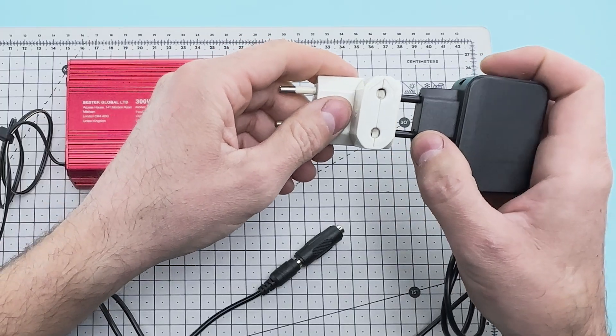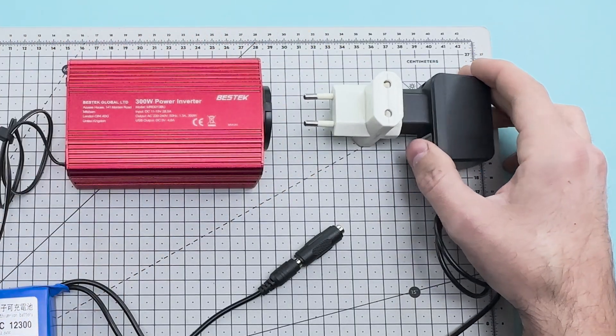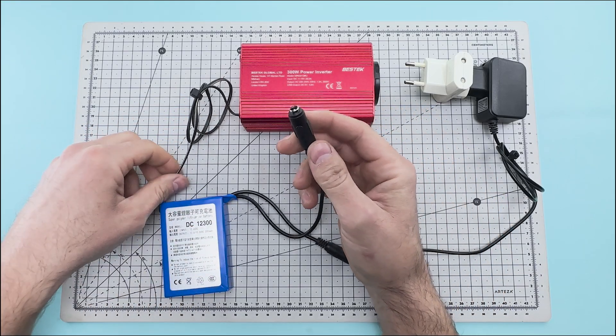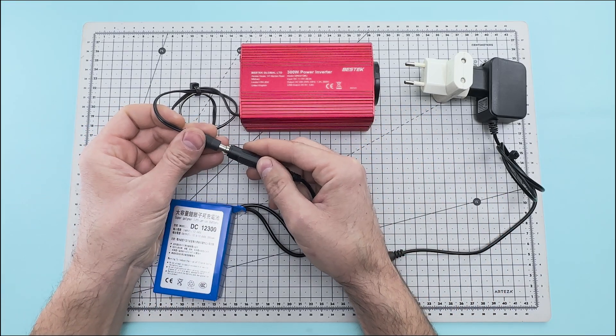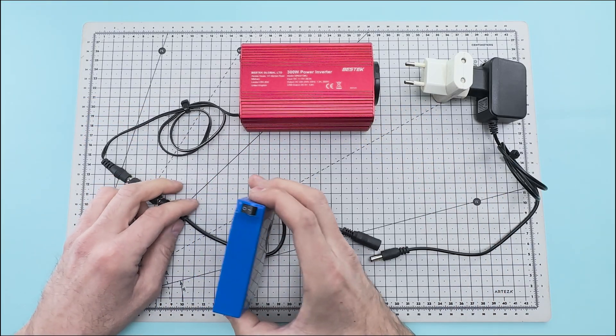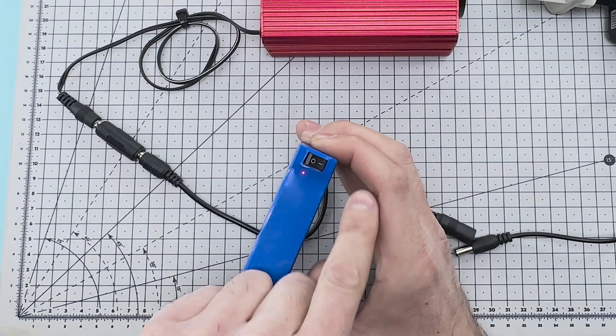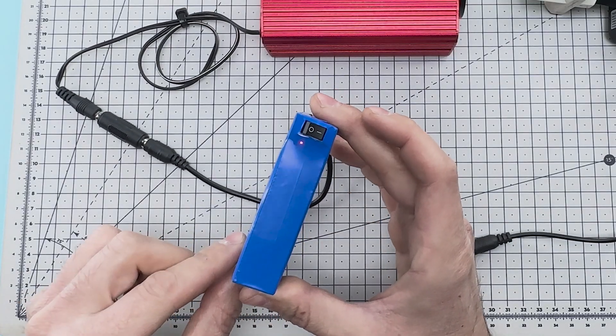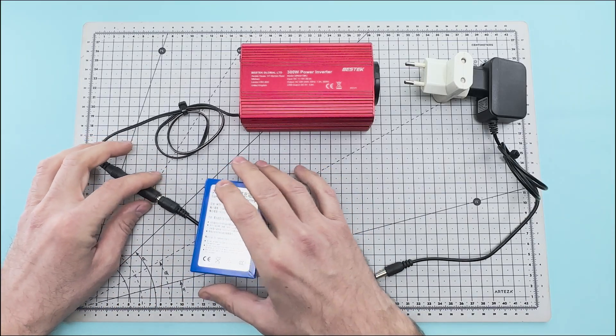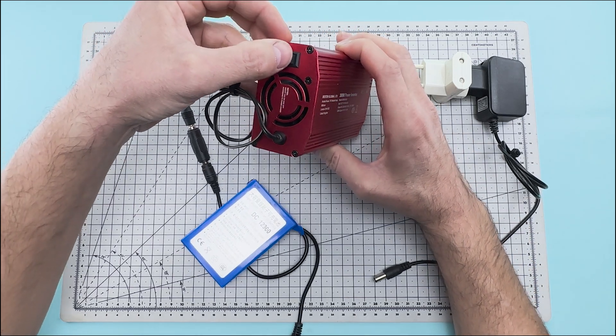We connect it to a multi-plug power strip. We connect the power inverter to the lithium battery. Now we press this switch to turn on the battery and turn on the power inverter.